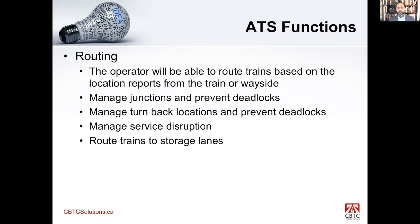Routing — operators have the ability to route trains based on location reports from the train and wayside. If there's a train on the track, the operator can select the train, set the route to the next station, or advance the train forward. Junction management and prevention of deadlocks: the ATS is the main subsystem preventing the system from deadlocking. At a junction with a switch or crossover, the ATS must ensure routes are selected in an order that prevents deadlocking — you don't want two routes requesting the same switch at the same time and finding it locked.